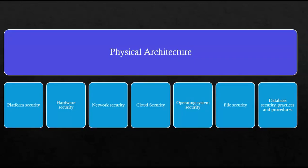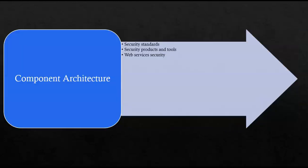After having the conceptual architecture, the next step is to define the physical architecture and map it to the conceptual architecture. This physical architecture must cover platform security, hardware security, cloud security, network security, operating system security, file security, database security, practices, and procedures. With the physical architecture in hand, start defining the component architecture and map it to the physical architecture. In component architecture, we can use security standards such as NIST and ISO for different cases and scenarios.